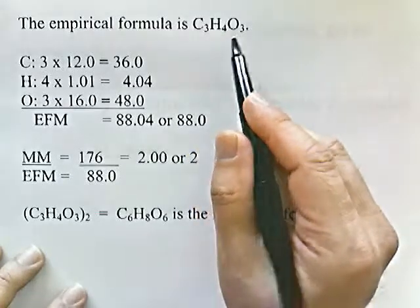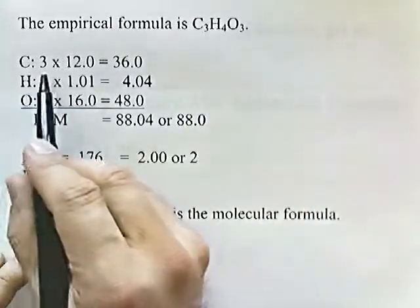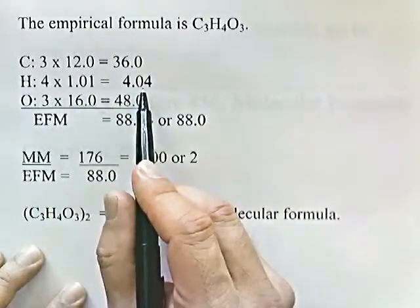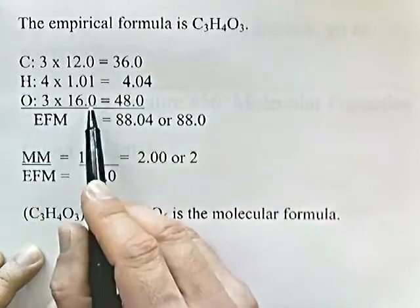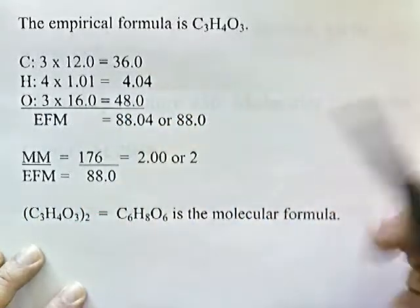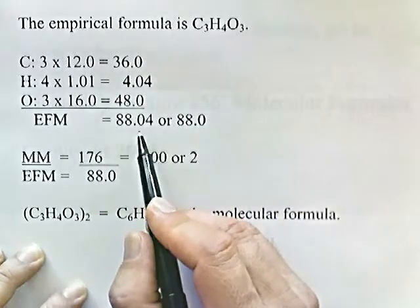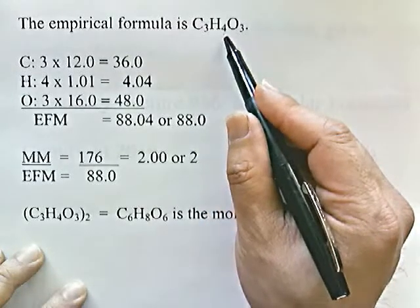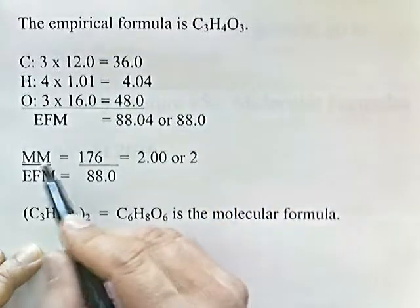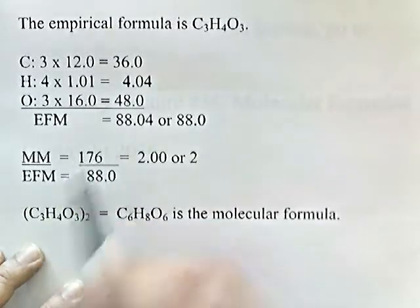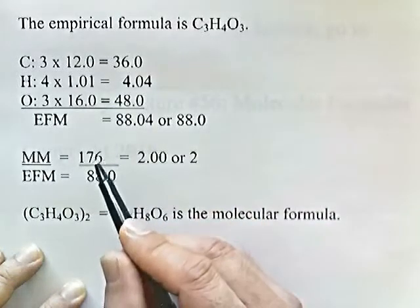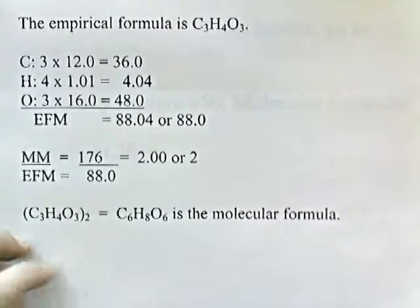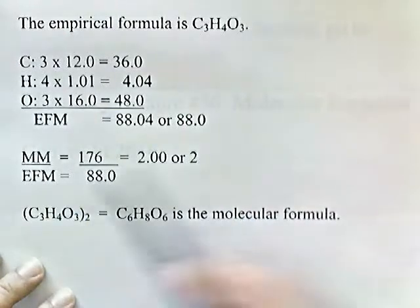With empirical formula C3H4O3, we find the empirical formula mass: 3 carbons (3 × 12 = 36), 4 hydrogens (4 × 1.01 = 4.04), and 3 oxygens (3 × 16 = 48), all from the periodic chart. Adding these gives 88.04, rounded to 88.0. The problem states the molecular mass is 176. Dividing 176 by 88 gives 2.00 — so the molecular formula has twice as many atoms as the empirical formula.